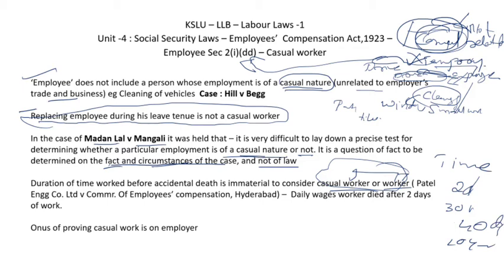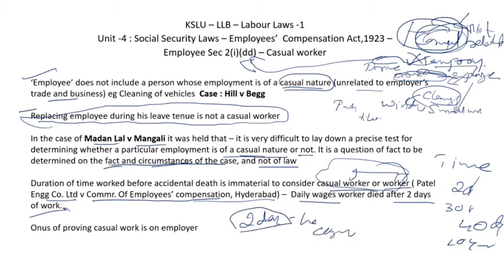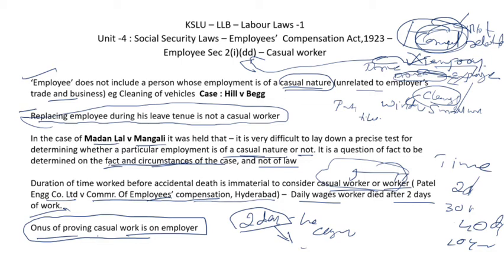Whether someone works for two days or ten years, what matters is the nature of the work, not the duration. In Patel Engineering Company Limited versus Commissioner of Employees' Compensation, a daily wage worker died after two days of work. The employer claimed he was a casual worker because he worked only two days, but this was rejected — the duration of time is not important; the nature of work is. The burden of proving that work is casual in nature lies on the employer.